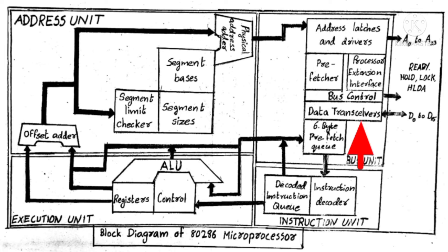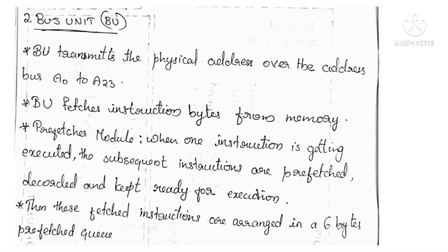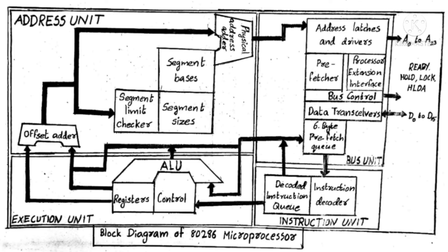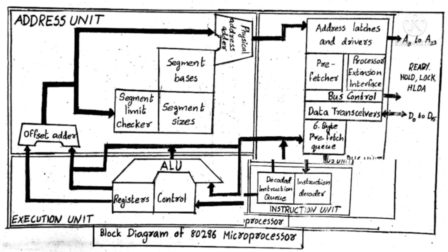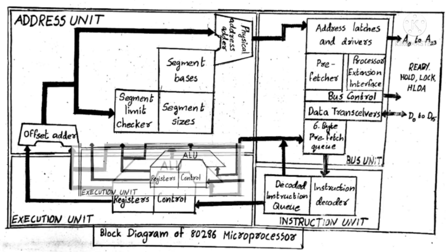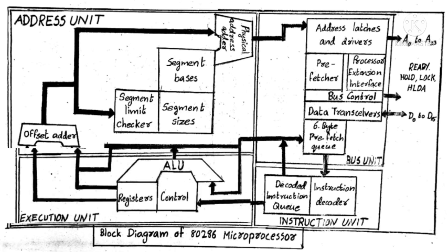As you can see in the figure, the bus unit also has a six-byte instruction queue so that instructions can be prefetched and stored in the queue. From the queue, the instruction will be given to the instruction unit, which will decode the instruction and then hand it over to the execution unit, which will execute that instruction.